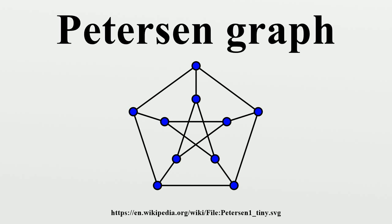The most common and symmetric plane drawing of the Petersen graph, as a pentagram within a pentagon, has five crossings. However, this is not the best drawing for minimizing crossings; there exists another drawing with only two crossings. Thus, the Petersen graph has crossing number two. Each edge in this drawing is crossed at most once, so the Petersen graph is 1-planar. On a torus the Petersen graph can be drawn without edge crossings; it therefore has orientable genus 1. The Petersen graph can also be drawn in the plane such that all edges have equal length — that is, it is a unit distance graph.